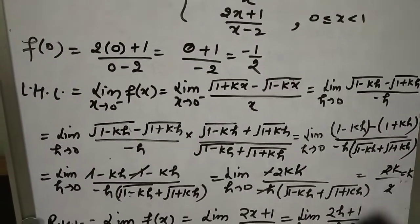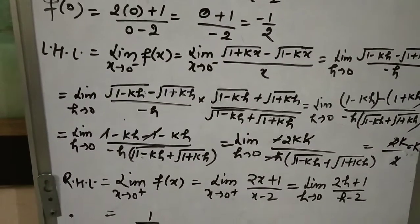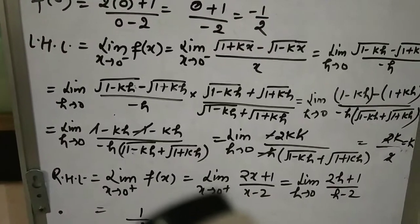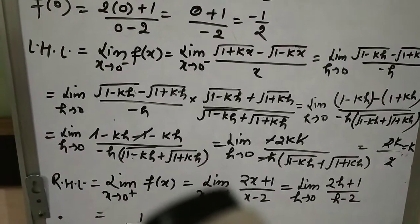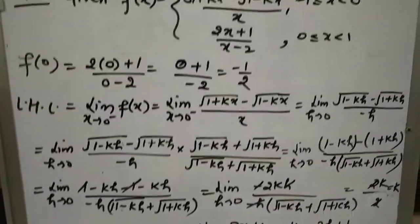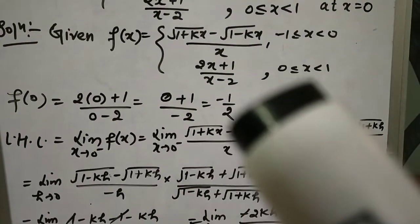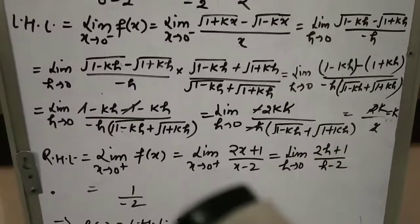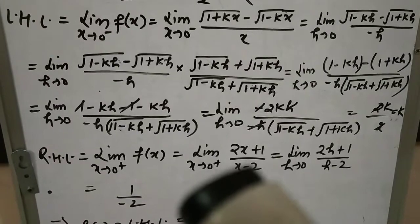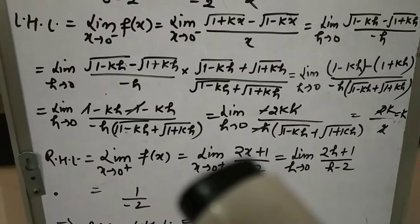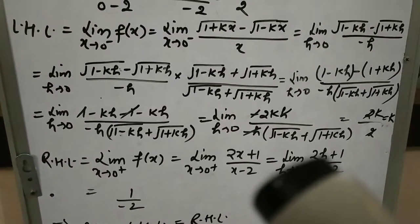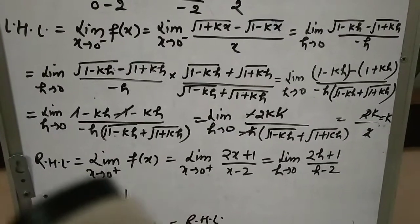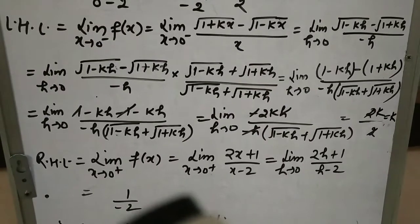Right hand limit: limit x→0⁺ f(x). x > 0 के लिए function (2x+1)/(x-2) लेना है। x की जगह h put किया: (2h+1)/(h-2)। h = 0 put करने पर: (0+1)/(0-2) = -1/2। So right hand limit = -1/2।